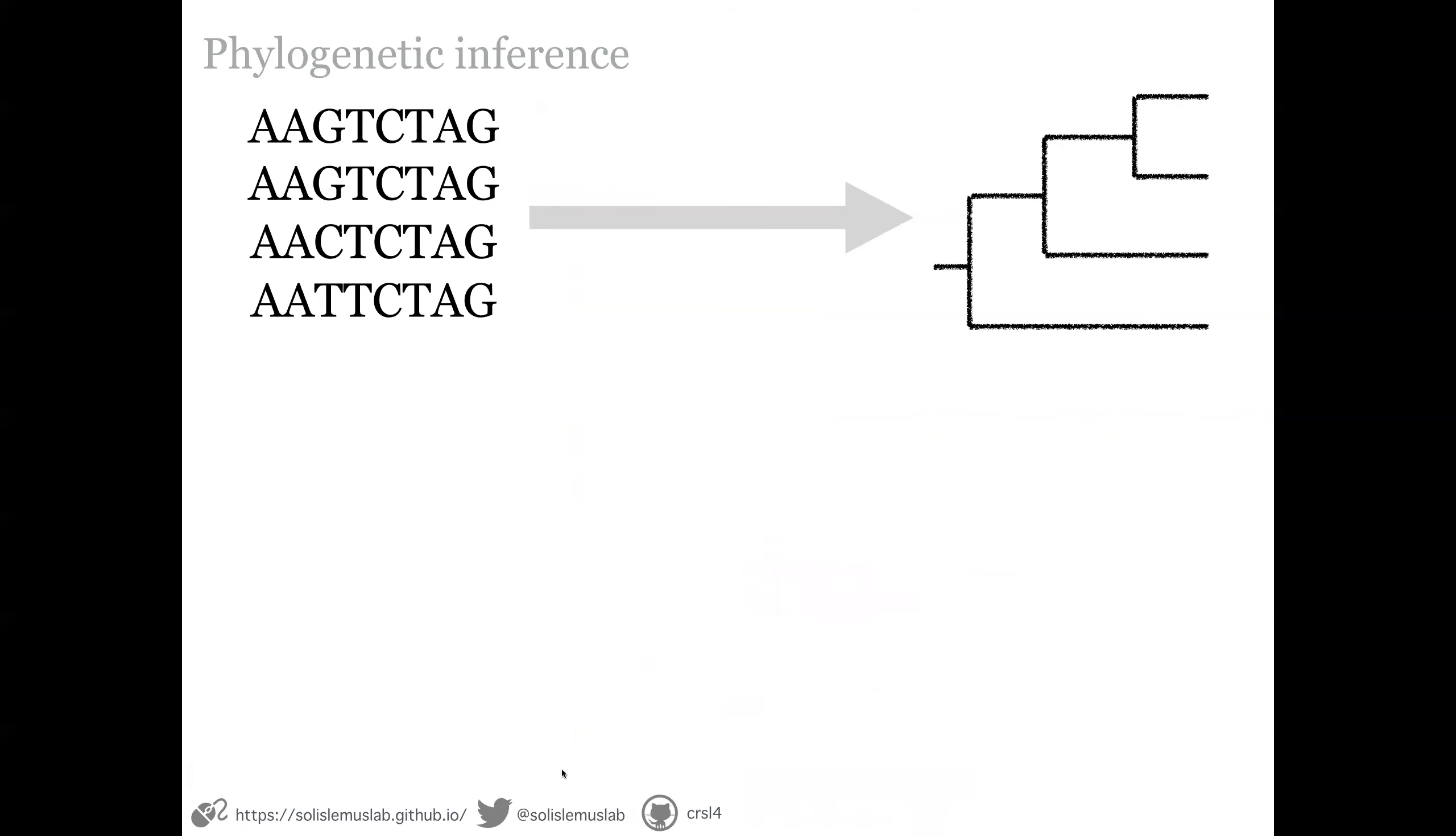So phylogenetic inference is a really rich area of research. And it's very interesting, because it has many challenges. So we spend a lot of time as a statistician thinking about identifiability. That is, there are many different biological processes that create the same signal in the data.